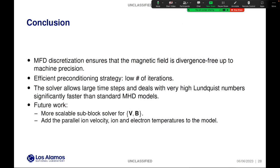In concluding this presentation, it is helpful to recall that the MFD discretization ensures that the magnetic field is divergence-free up to machine precision, and that was verified by the numerical tests. The algorithm performance shows that the preconditioner and the nonlinear solver perform well because we got low numbers of iterations. The solver also allows large time steps and deals with very small resistivities in a fast runtime. For future work perspectives, we're working on replacing the sub-block solver by a more scalable option than just SuperLU, and also adding more unknowns to the model. Namely, we would like to add, for example, the parallel ion velocity, the ion temperature, and the electron temperature. Thank you very much for your attention.